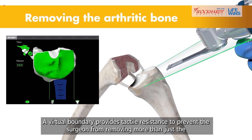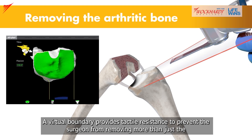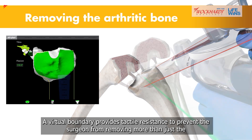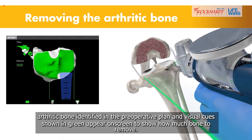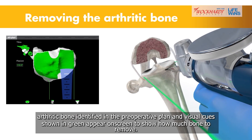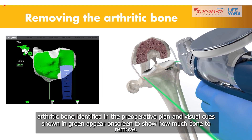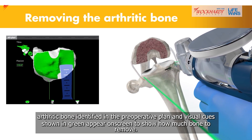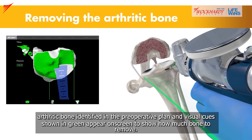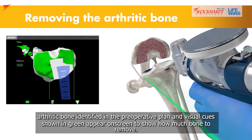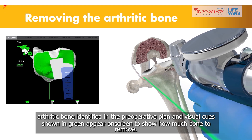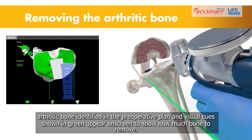A virtual boundary provides tactile resistance to prevent the surgeon from removing more than just the arthritic bone identified in the preoperative plan. And visual cues, shown in green, appear on screen to show how much bone to remove.